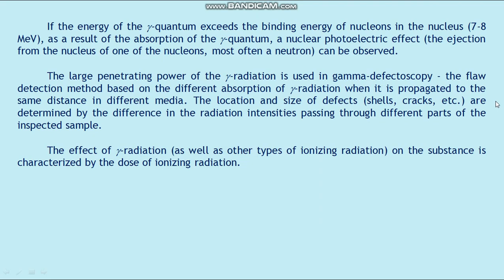If the energy of a gamma quantum E exceeds the binding energy of nucleons in the nucleus, 7 to 8 MeV, then as a result of the absorption of the gamma quantum, a nuclear photoelectric effect — the ejection from the nucleus of one of the nucleons, most often a neutron — can be observed. The large penetrating power of gamma radiation is used in gamma defectoscopy. This flaw detection method is based on the different absorption of gamma radiation when it propagates through the same distance in different media. The location and size of defects are determined by the difference in radiation intensities passing through different parts of the inspected sample. The effect of gamma radiation, as well as other types of ionizing radiation on a substance, is characterized by the dose of ionizing radiation.